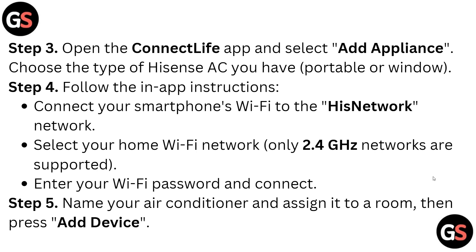Step three: open the Connect Live app, then select 'Add Appliance' and choose the type of Hisense AC you have — portable or window. Step four: follow the in-app instructions. Connect your smartphone Wi-Fi to the Hisense network, then select your home Wi-Fi network. Note that only 2.4 GHz networks are supported.